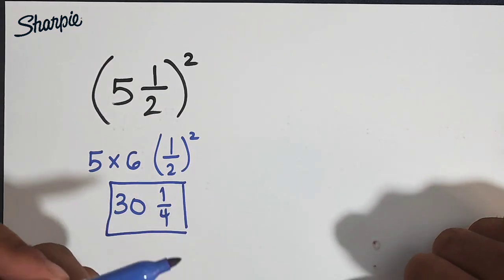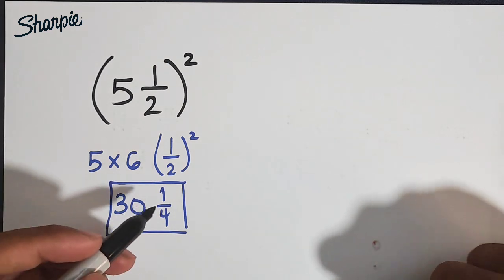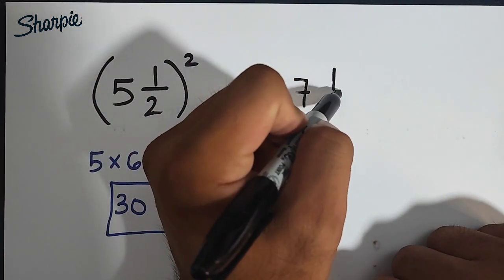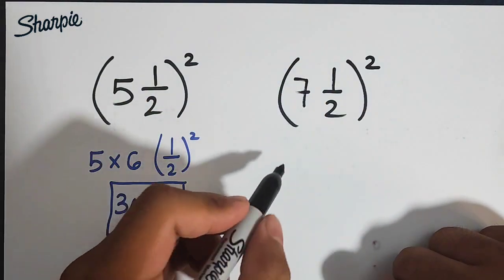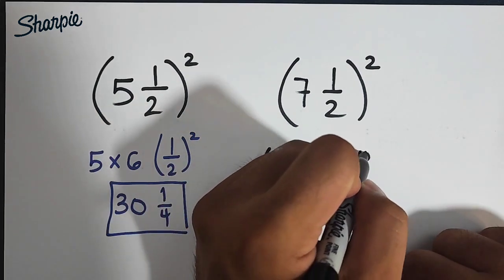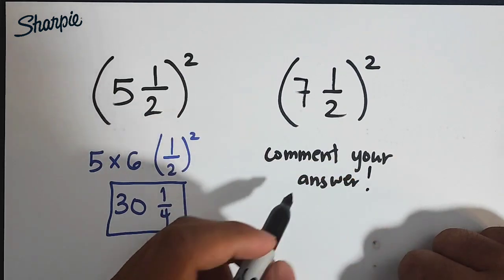Now it's your turn to answer this problem. This is your assignment. Please comment down below what is your answer here. We have 7 and 1 half raised to the second power. So comment your answer. Bye-bye!